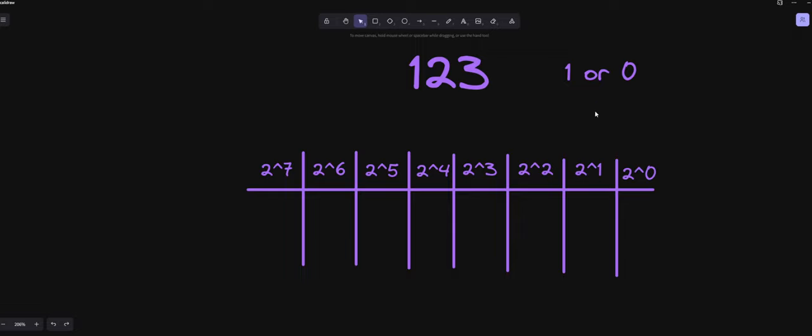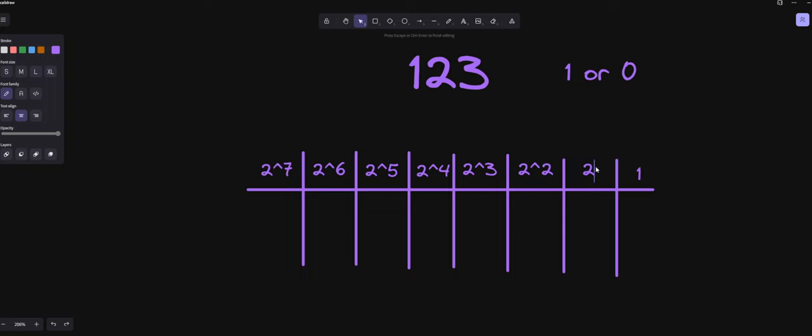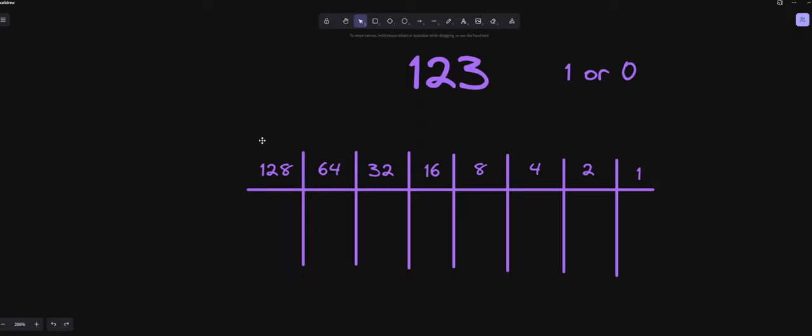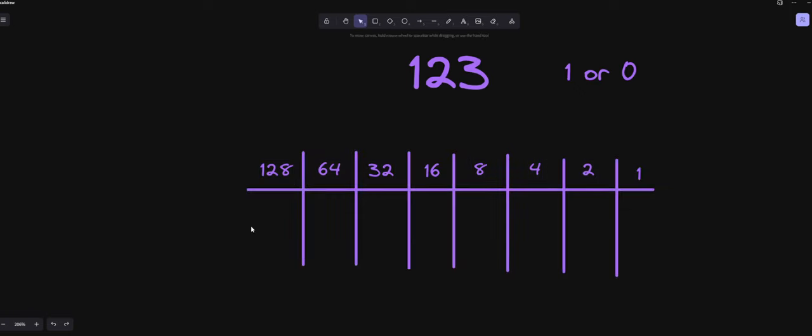And what a bit is, is it's going to be an individual 0 or 1. And when we're looking at it here, we have 2 to the 0, which is going to be 1. We have 2 to the 1, which is going to be 2. We have 2 to the 2, which is 4. 2 to the 3 is going to be 8. 2 to the 4 is going to be 16. 2 to the 5 is going to be 32. 2 to the 6 is going to be 64. 2 to the 7 is going to be 128. That's the number that we have. So this is going to be our 1-byte binary number.